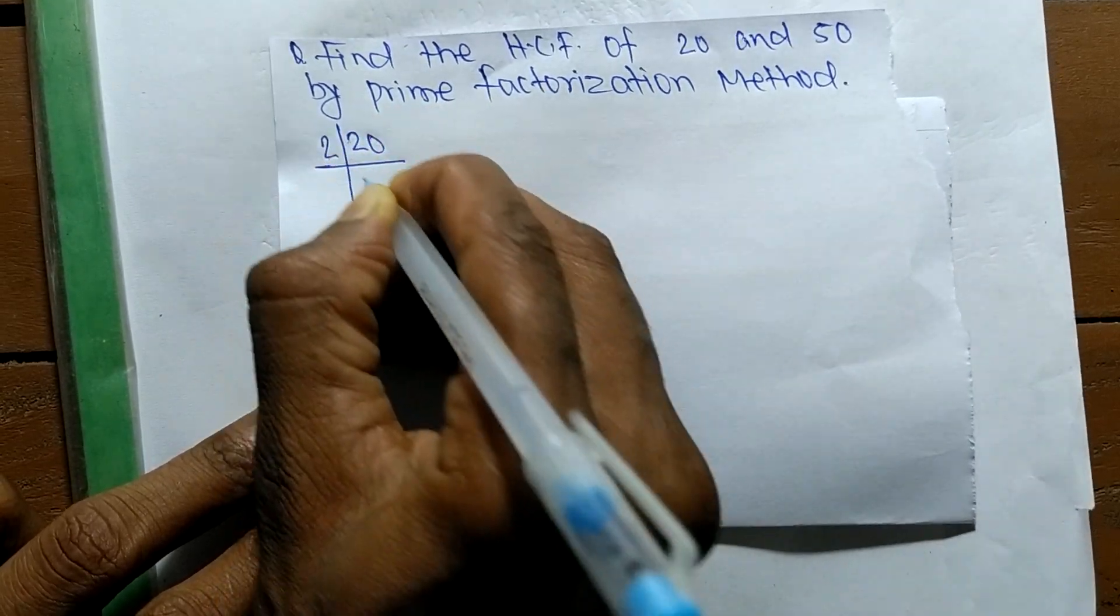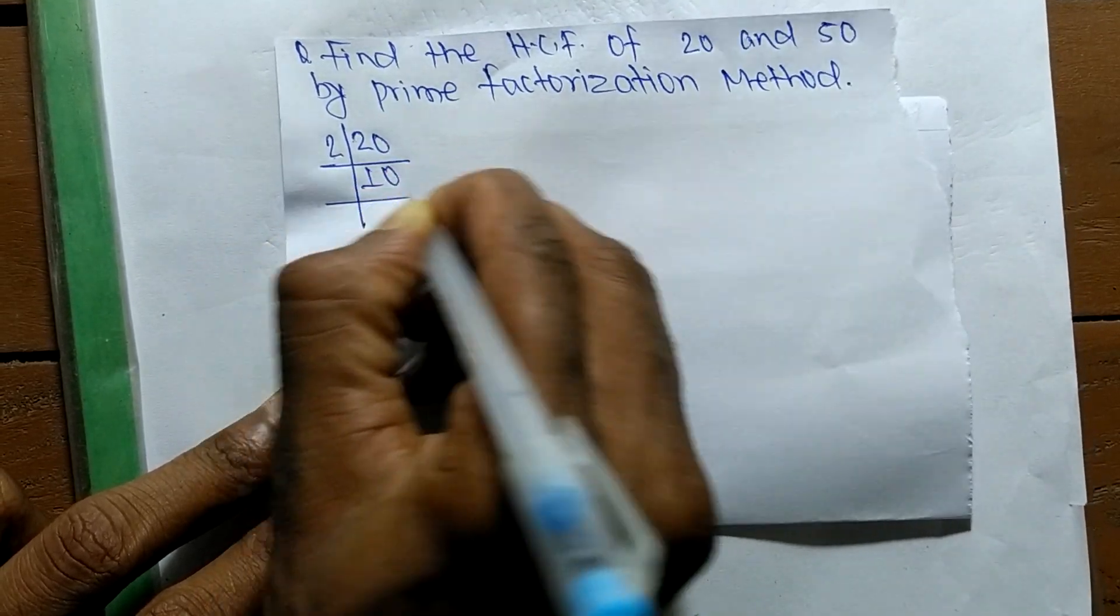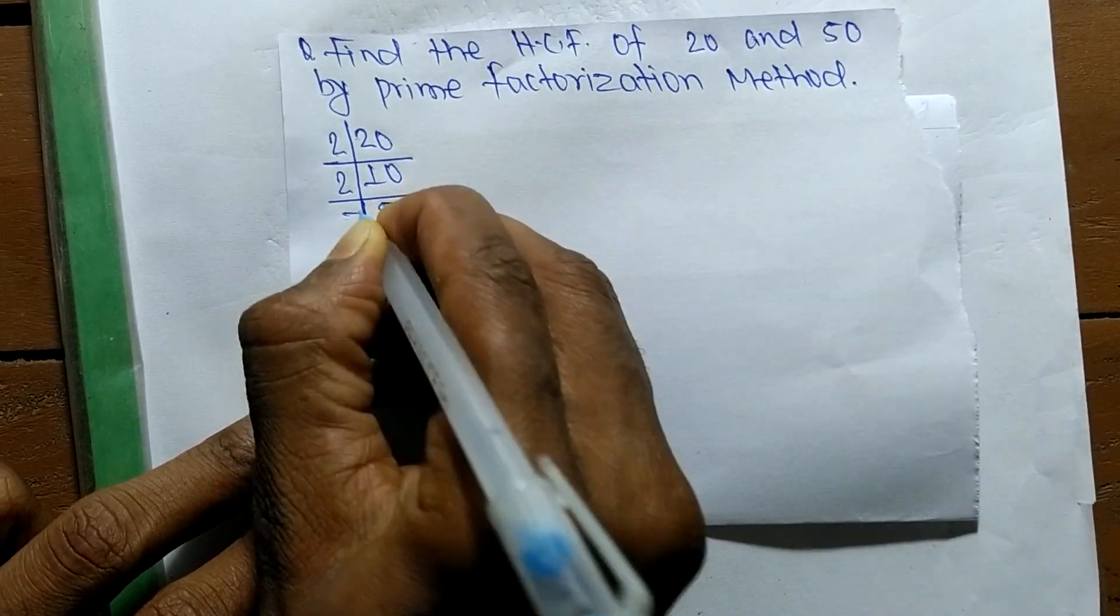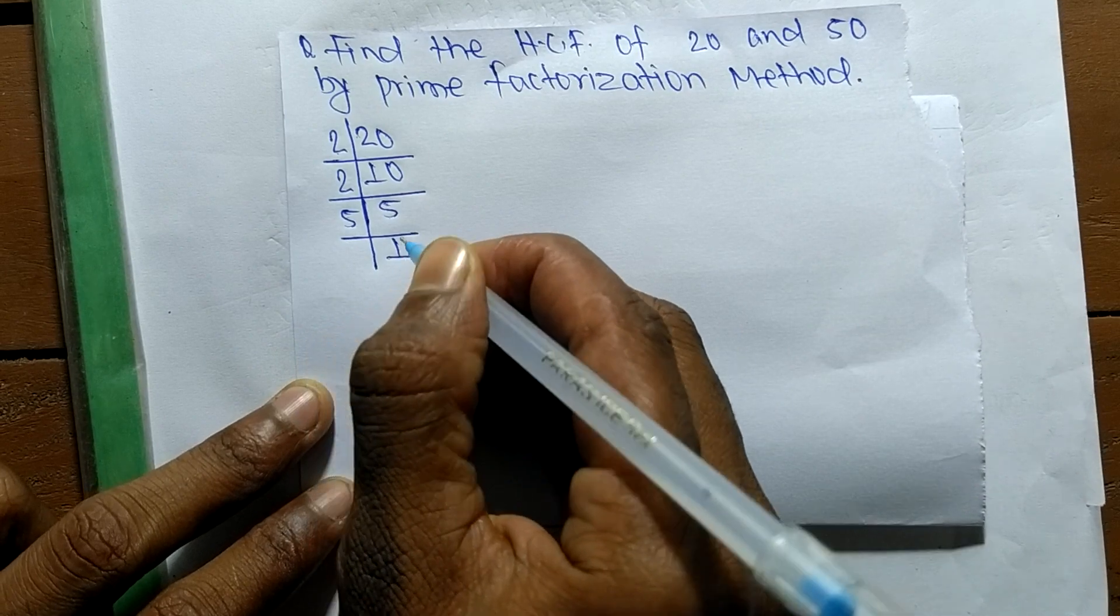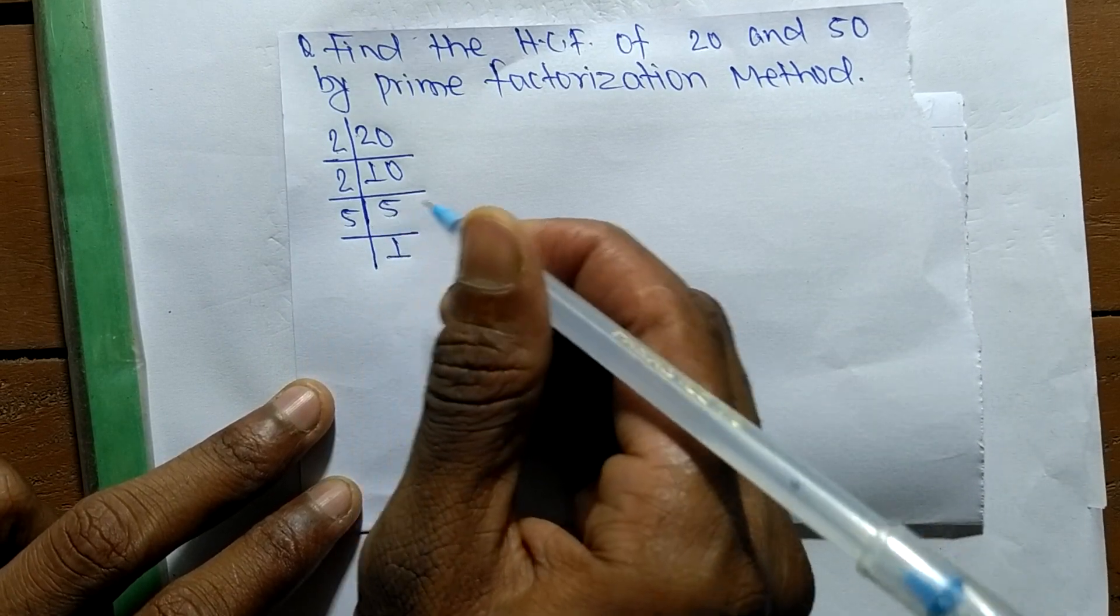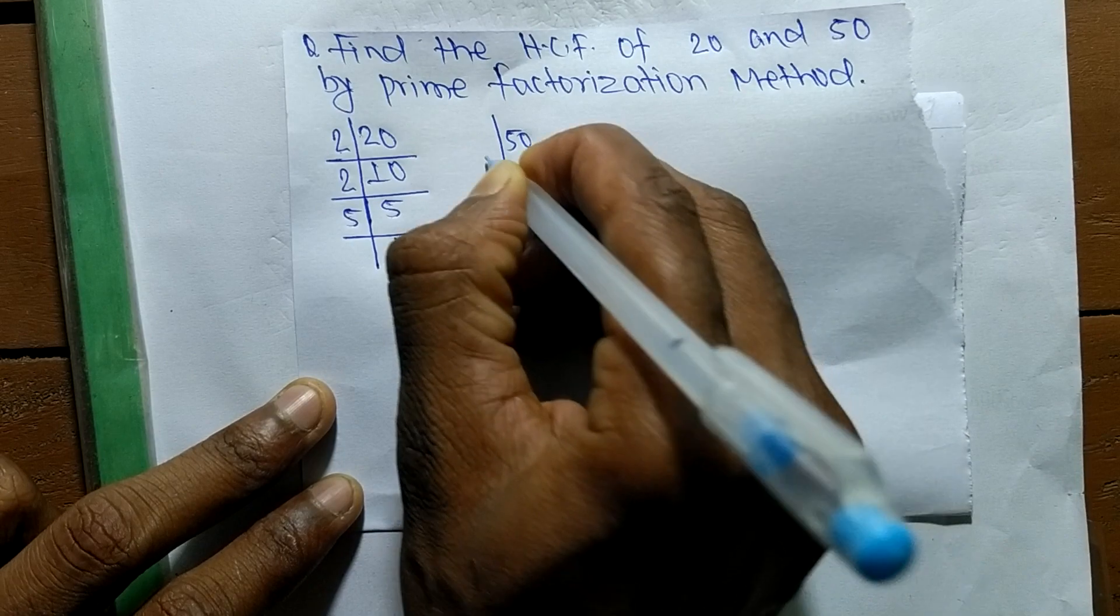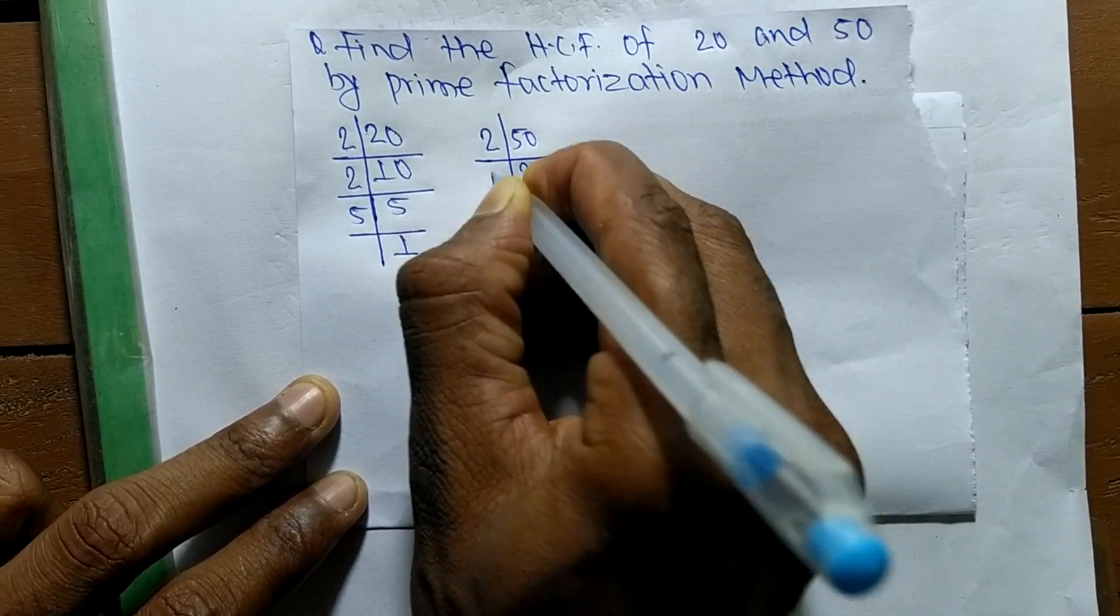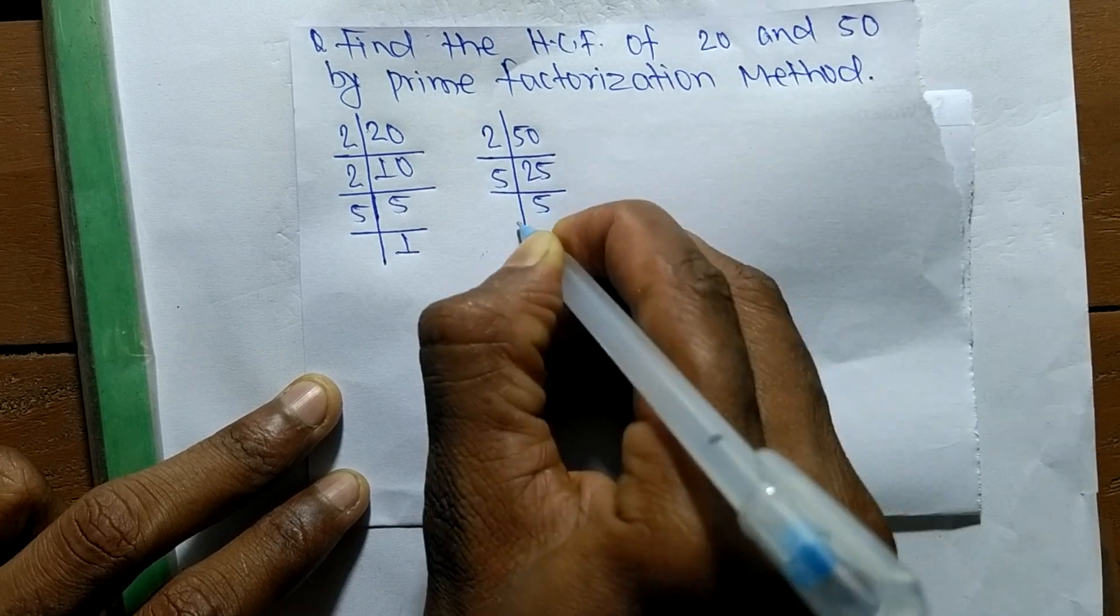The prime factors of 20 are: it is 2 times 10 means 20, 2 times 5 means 10, and 5 times 1 means 5. The prime factors of 50 are: it is 2 times 25 means 50, 5 times 5 means 25, and 5 times 1 means 5.